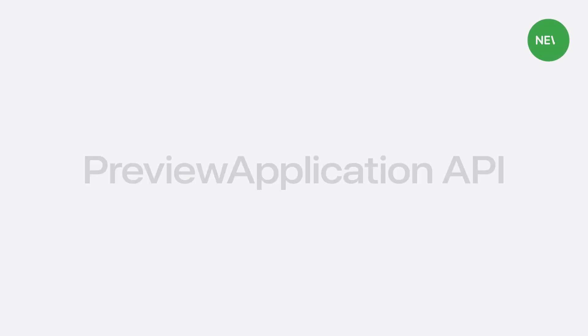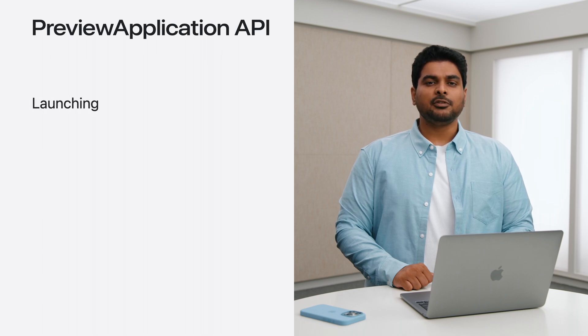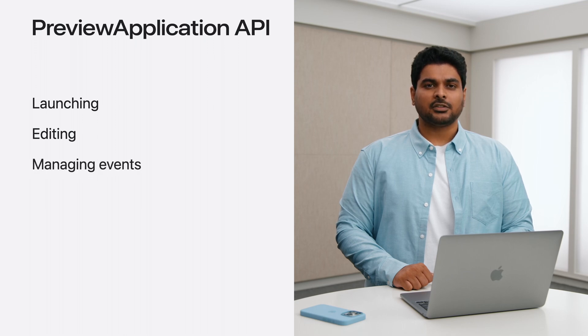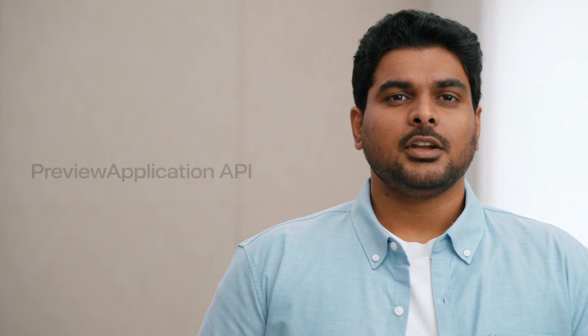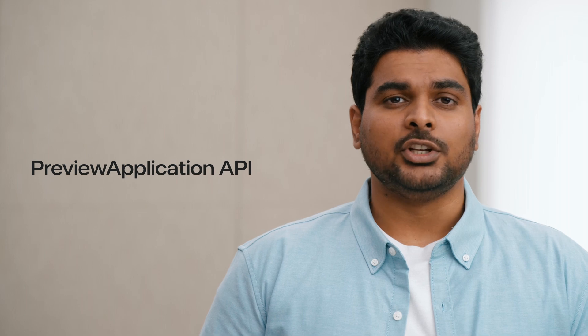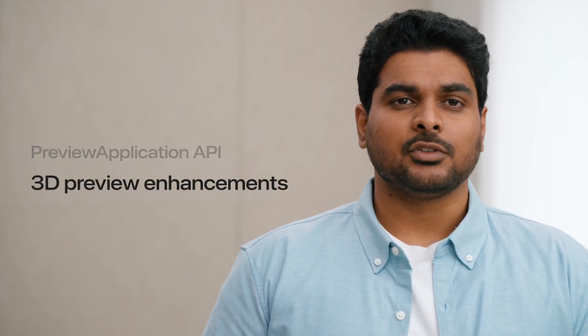Our goal is to allow your apps more control over the QuickLook experience, while also leveraging SwiftUI and Swift concurrency. This year, we are introducing a brand-new Preview Application API built on all these principles. Now you can integrate QuickLook into your apps with just a few lines of code. The API allows you to preview individual files, but also provides a way to open multiple files in a collection view. You can customize the default editing options, and it provides an intuitive way to manage the lifecycle of the previewed files. Later, I will cover the latest 3D Preview Enhancements in QuickLook.